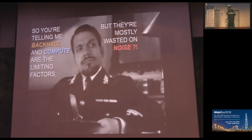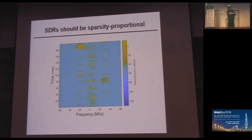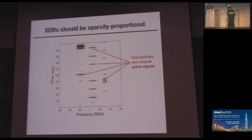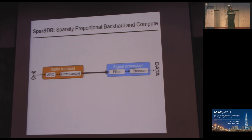So how do we want SDRs to operate? We want them to be sparsity-proportional — in simpler words, they should send data only when there is a signal. Let's take a look at this example. This visualization is called a spectrogram, and we are capturing the spectrum at the ISM unlicensed band. The X-axis represents frequency and the Y-axis represents time. Basically, we just need the signal represented here in yellow, and we just need to ignore all the noise in blue — we don't need to send any data which is noise. We need to threshold it and send only the signal, and only backhaul and compute on these active signals. Sparse SDR operates on this common sense and produces sparsity-proportional backhaul and compute.